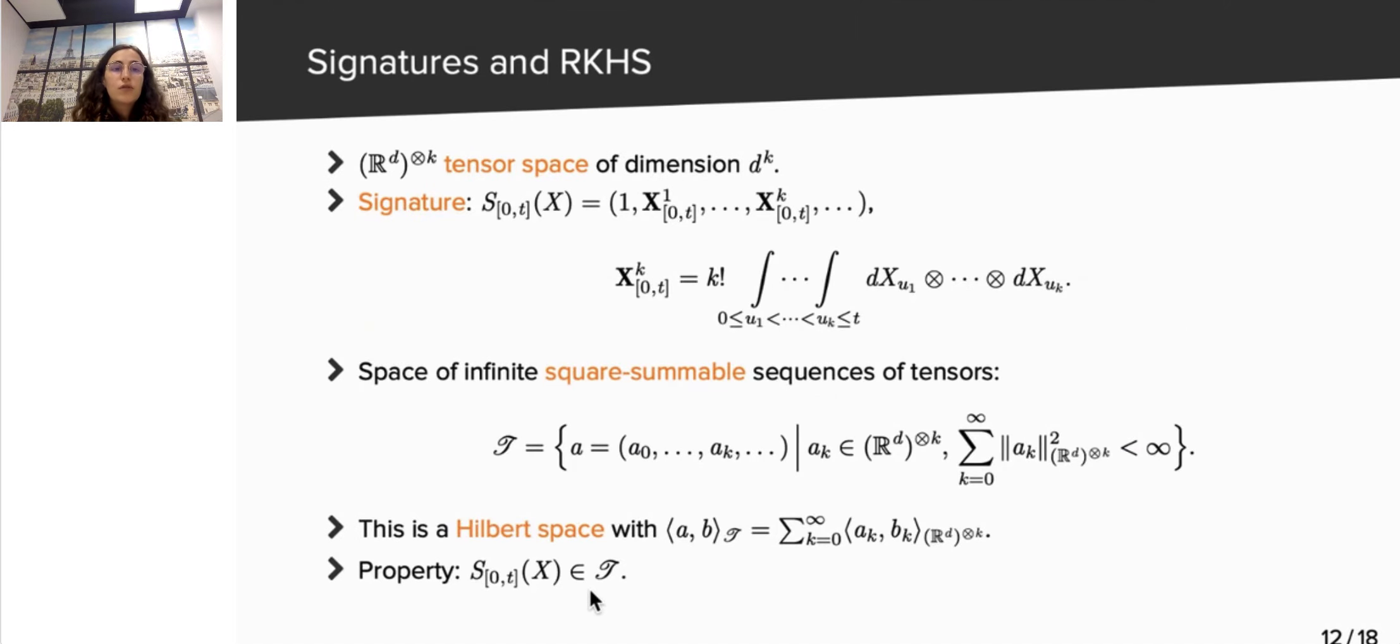More precisely, signatures are infinite sequences of tensors of increasing orders. If we denote by R^D tensor k the tensor space of order k, then the signature of order k is an element of this space, defined as iterated integrals of X. The precise meaning of this obscure formula is not needed here. We refer the interested participants to a textbook on the matter. We then introduce the space T of infinite sequences of tensors of increasing order, which are square-summable. Endowed with the right scalar product, this is an infinite-dimensional Hilbert space. This is exactly the Hilbert space that was mentioned in our main results, and where the data is embedded via the signature. Note that classical properties of the signature ensure that they are square-summable under assumptions and are therefore elements of T.